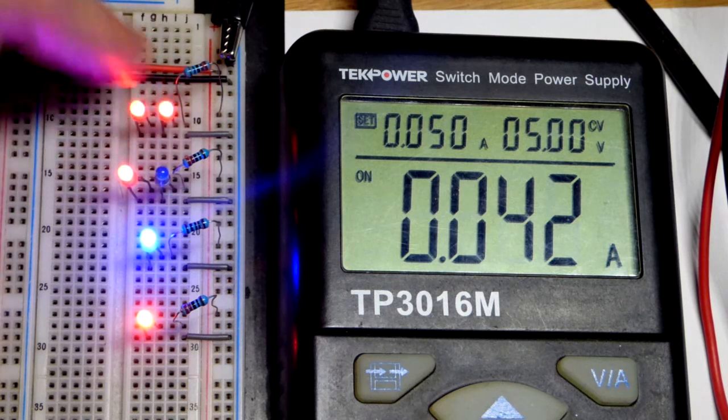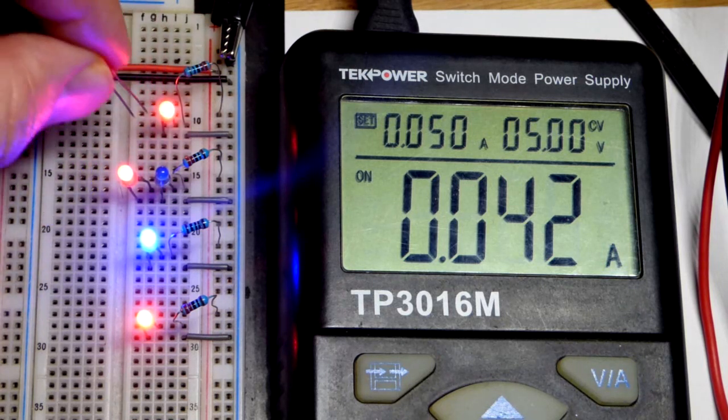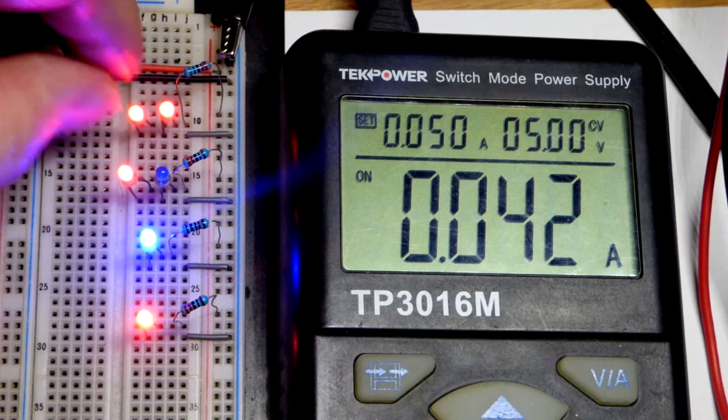If we had the maximum current they could handle right now and you removed one, it would get too much current because it would be getting twice as much.